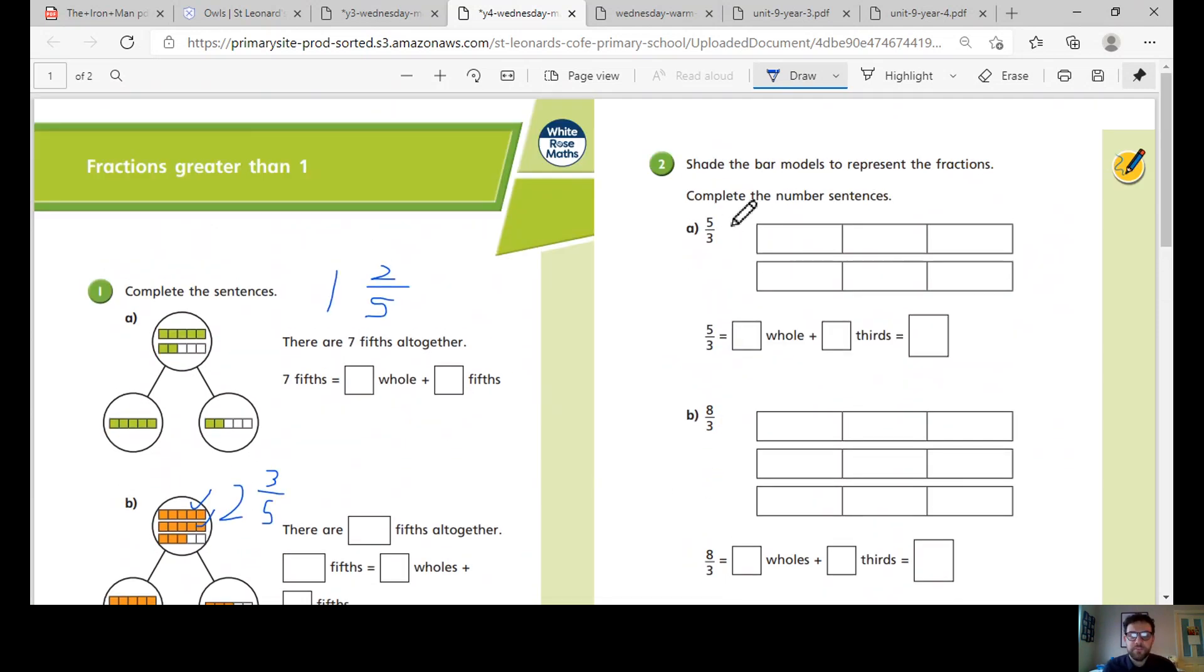Shade the bar model to represent the fraction. Complete. Five thirds. That means we've got five of them. So we've got one, two, three, four, and five. So that means I've got one hole bar and I've got two thirds.